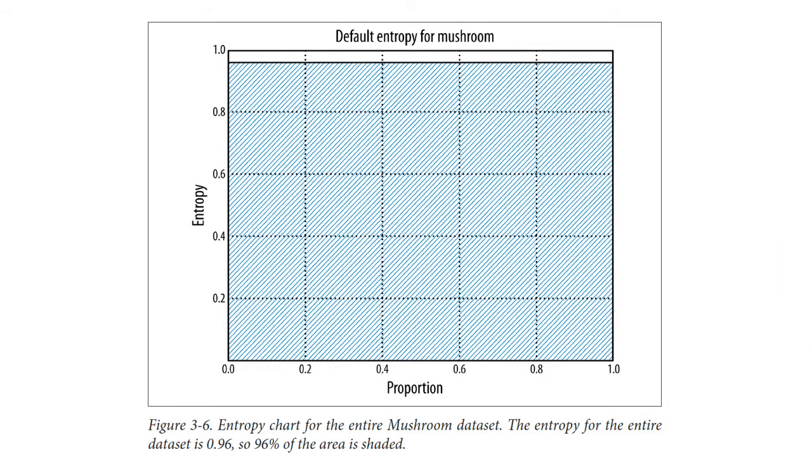This chart shows the entropy of the entire data set. In such a chart, the highest possible entropy corresponds to the entire area being shaded. The lowest possible entropy corresponds to the entire area being white. The entropy for the entire data set in this example is 0.96, so 96% of the area is shaded. Such a chart is also useful for visualizing information gain from different partitions of a data set, because any partition can be shown simply as slices of the graph, with the widths corresponding to the proportion of the data set, each with its own entropy, as we'll see next.